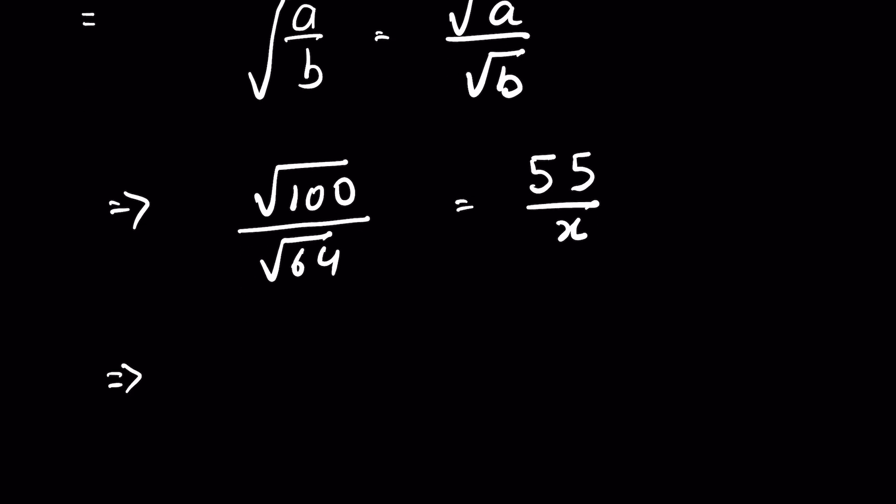Now square root of 100, we can write it as 10 square under square root, and 64 as 8 square under square root. Now we can remove this square root with this square, because square root means it is raised to the power of 1 upon 2.